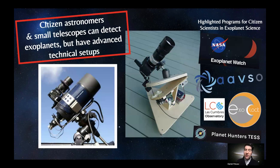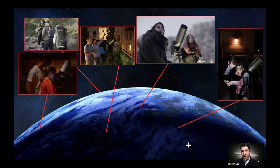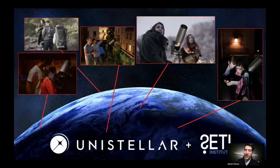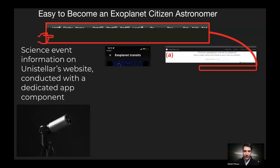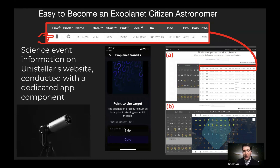Citizen astronomers and small telescopes can detect these candidates, so they can help confirm these exoplanets — but generally they have advanced technical setups. I'm very honored to be working with the SETI Institute and Unistellar, where we're working with a telescope that is really easy to use. It's a smart digital telescope that fits in a backpack and is completely operated with a smartphone application. It's very easy to do an exoplanet observation — you just open up the app, press a couple buttons, click on a couple links, and everything autofills, and the telescope pretty much does all the work for you.